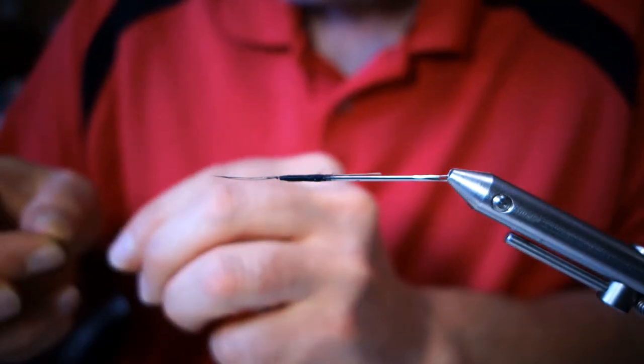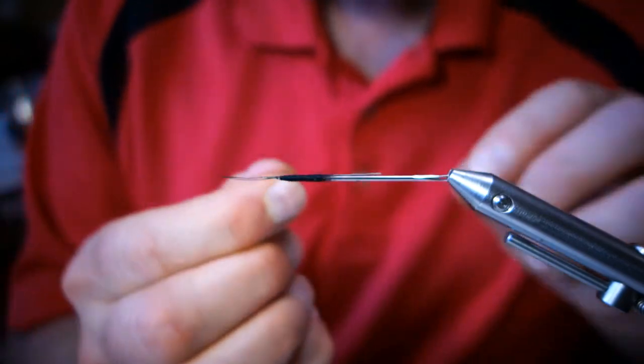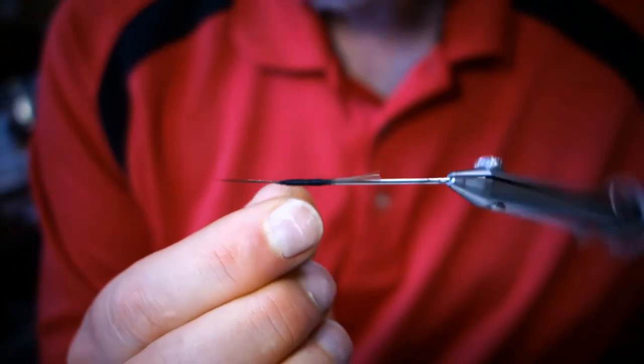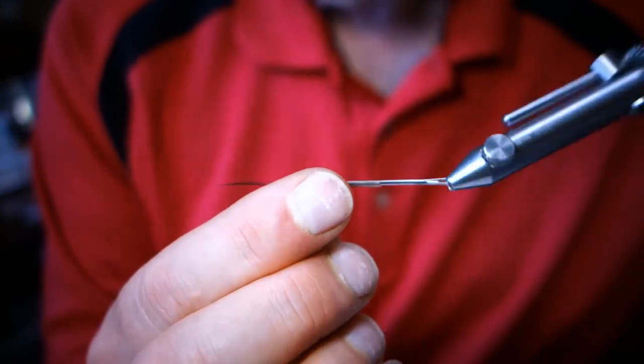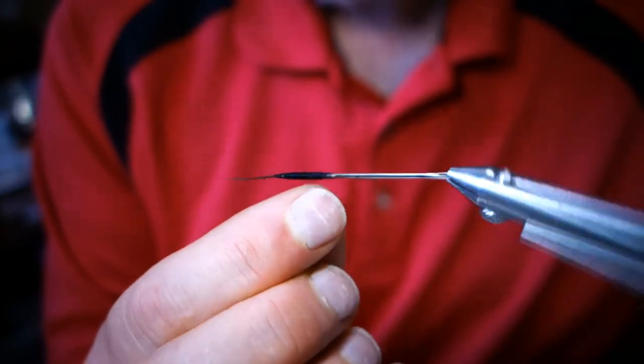You don't want it too thick because I punch the hook through the body when I secure it, and it's kind of hard if it's too thick. You don't need the bulk. You'll realize when tying this fly you don't need it as big.